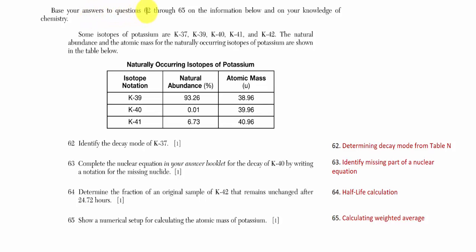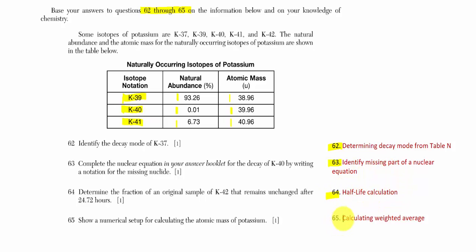For questions 62 through 65, the narrative lists isotopes of potassium with their natural abundances and exact atomic masses. We'll explore radioactive decay of one isotope, complete a nuclear equation, do a half-life calculation, and calculate a weighted average atomic mass. A lot of nuclear questions and one from atomic structure.